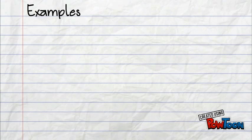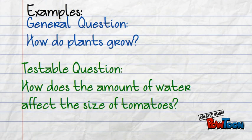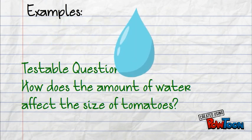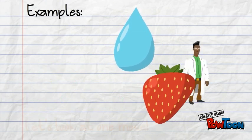Let's look at an example. Our general question would be: how does a plant grow? Our testable question would actually be: how does the amount of water affect the size of tomatoes? Do you see the change is actually the water, and what we're measuring is the size of the tomatoes?